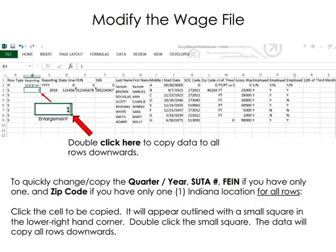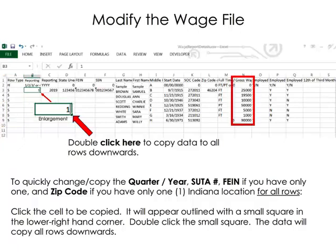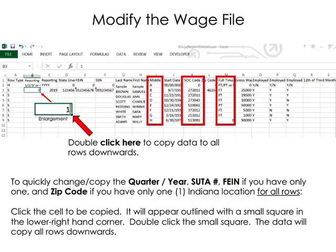Once you have ensured fields with leading zeros are correct, continue updating the file. Add a new row for each employee not previously reported. Use a capital S for the row type. Be sure to update gross wages for each wage record for the new reporting period. The middle initial, SOC code, and full-time and part-time designations can also be updated at this time if missing or incomplete.